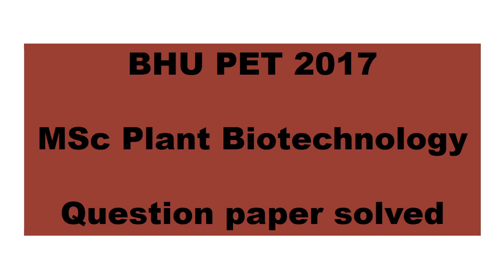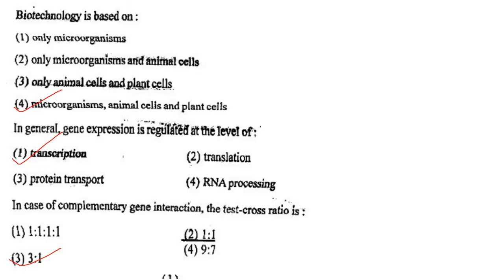Hello everybody, today we will be discussing BHU PET 2017 MSc Plant Biotechnology question paper. Coming to the first question: Biotechnology is based on option 1, only microorganisms; option 2, only microorganism and animal cells; option 3, only animal cells and plant cells; option 4, microorganism, animal cells and plant cells. Answer is option 4: microorganism, animal cells and plant cells.